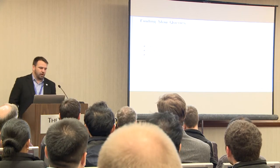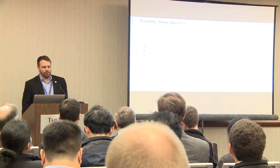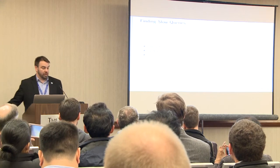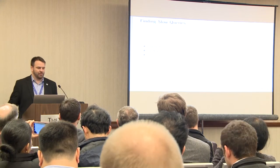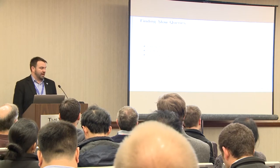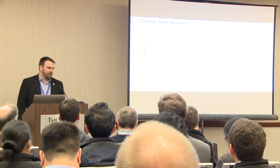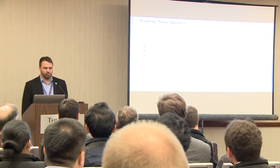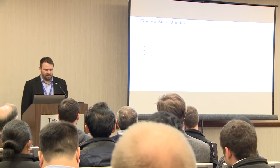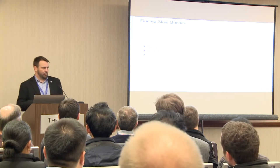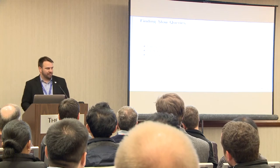We're going to talk about the different ways of finding slow queries. There are three main ways of doing that. First, you have to enable logging and then look at your logs. That's kind of painful, so you want to use something like PG Badger for log analysis. Then there's PG stat statements for viewing active query statistics.